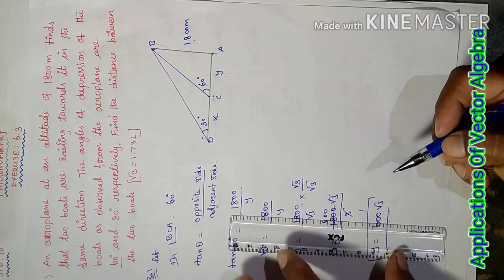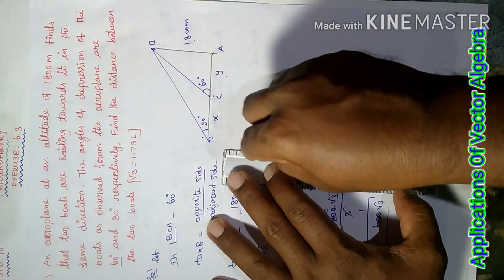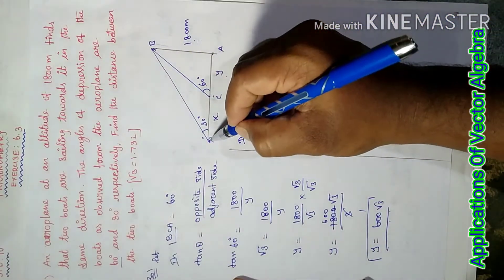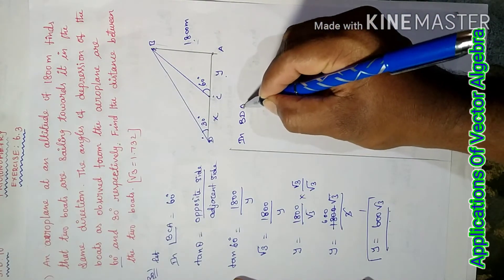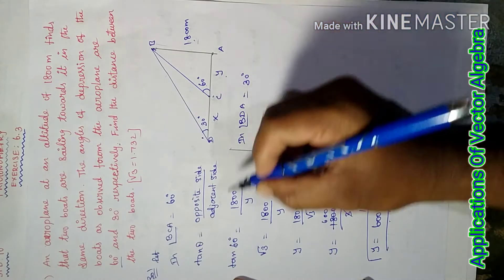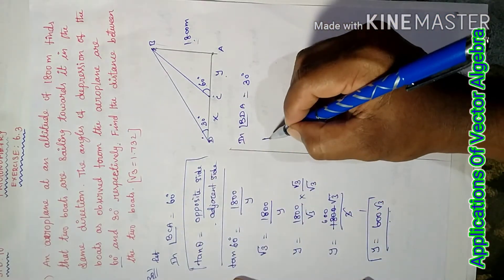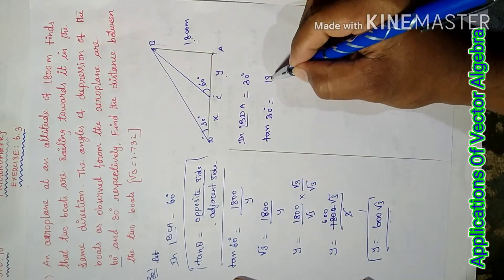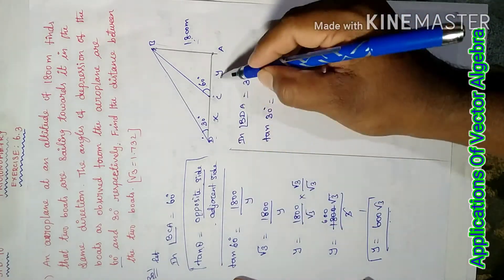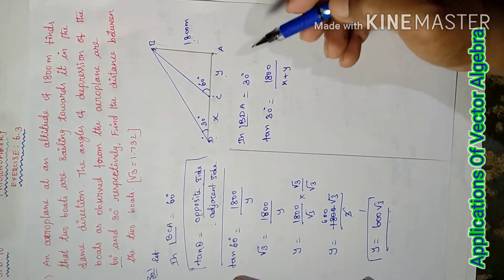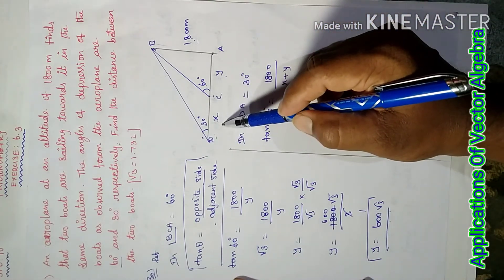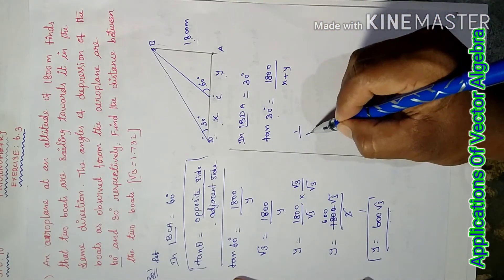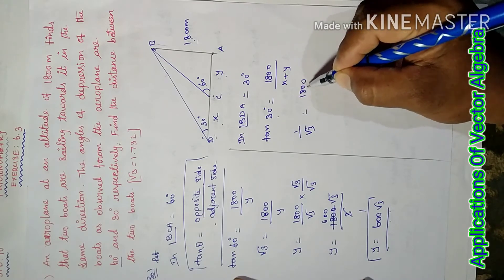For the second boat, in triangle BDA, angle BDA equals 30 degrees. Using the same formula, tan 30 degrees equals opposite side 1800 over adjacent side x plus y. Adding both sides, tan 30 degrees equals 1 over root 3, equals 1800 over (x plus y).